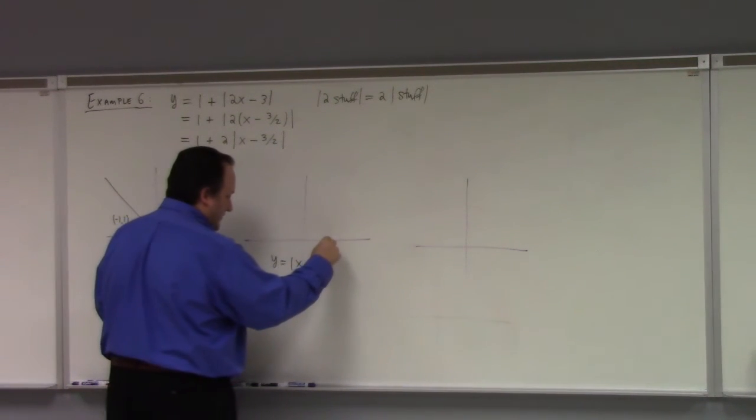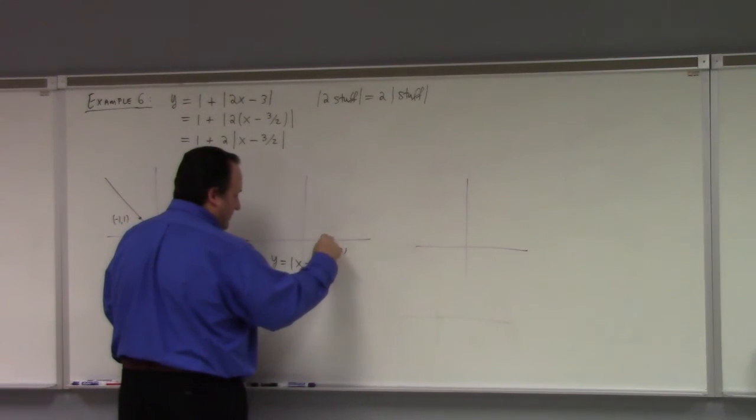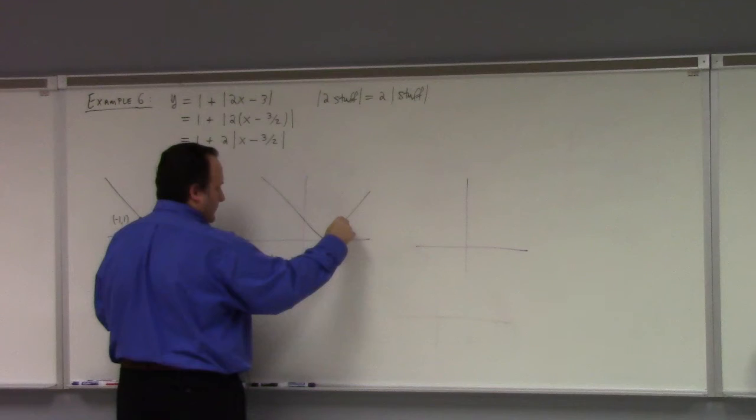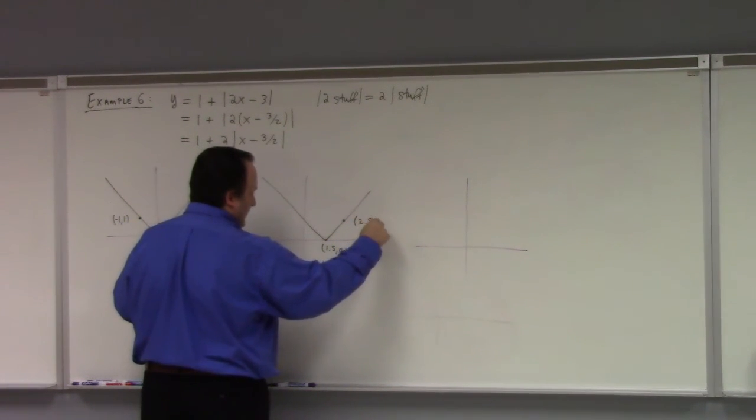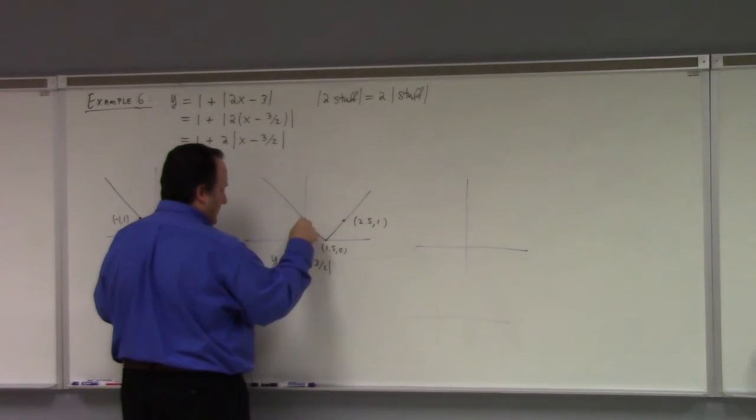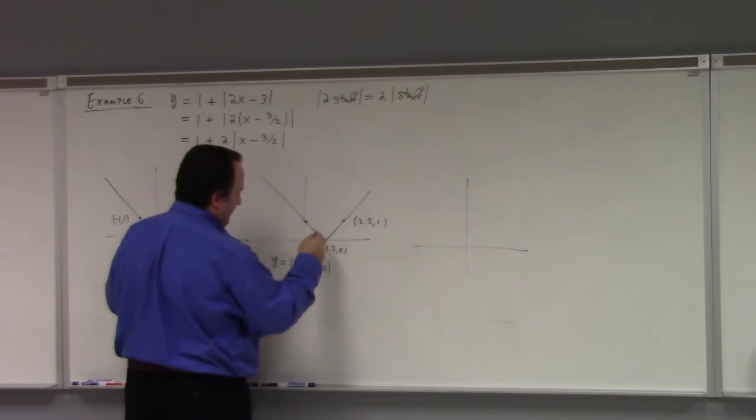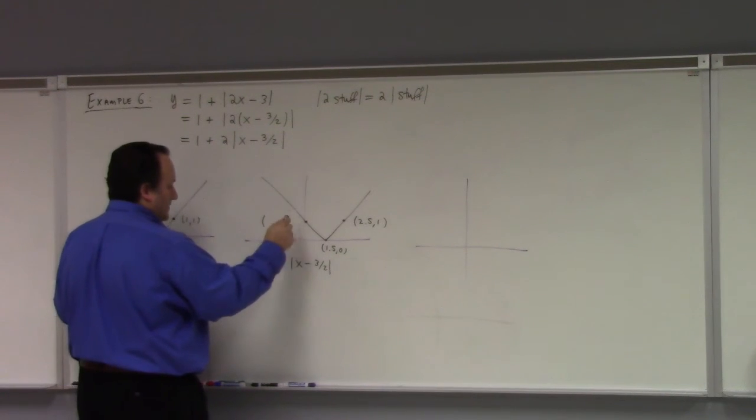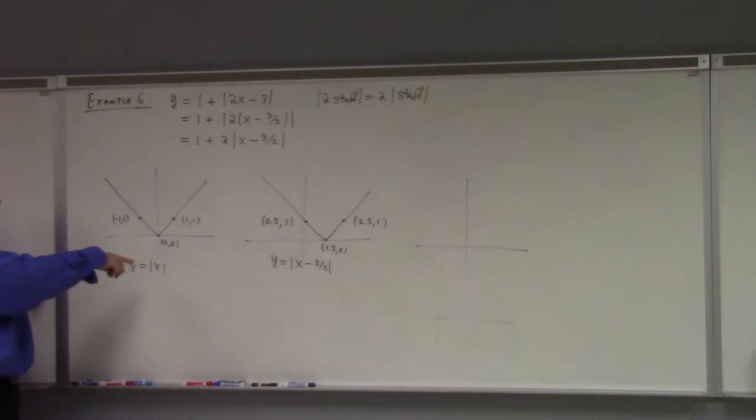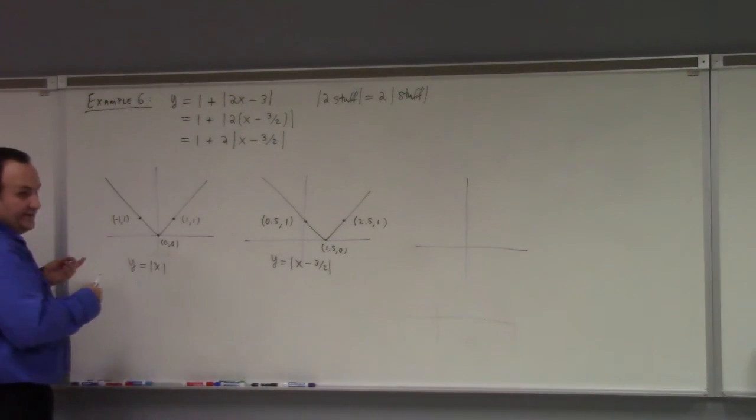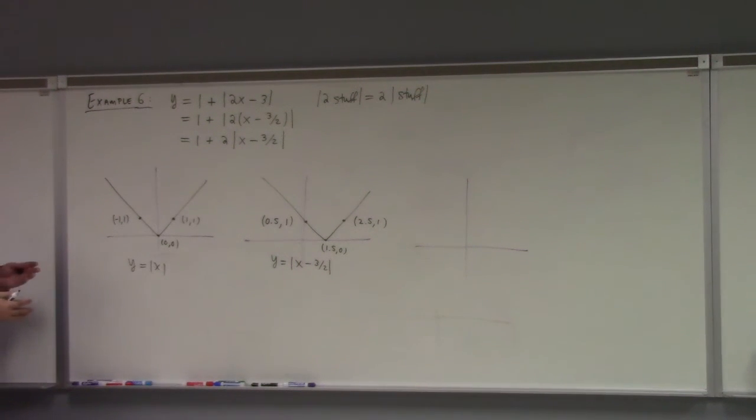So that makes (0, 0) move over to (1.5, 0). And this point would then be add 3/2, which is 1.5, so I get (2.5, 1). And this point over here would be (0.5, 1). So I'm adding 3/2 is 1.5. If you add 1.5 to -1, you get 0.5. If you add 1.5 to 1, you get 2.5. All right. Next, I'm going to stretch by 2.